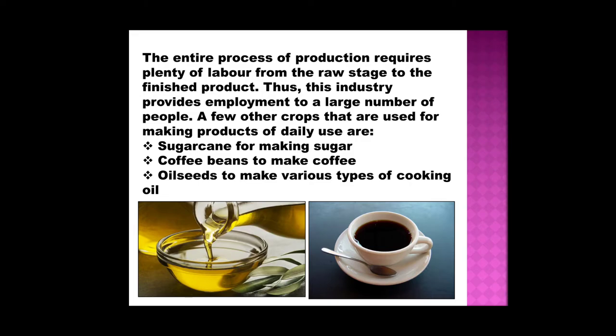The entire process of production requires plenty of labor from the raw stage to the finished product. Thus, these industries provide employment to a large number of people. A few other crops used for making products of daily use are: sugarcane for making sugar, coffee beans to make coffee, and oilseeds to make various types of cooking oil. Farmers harvest these crops and they are brought to factories where the finished products are made.